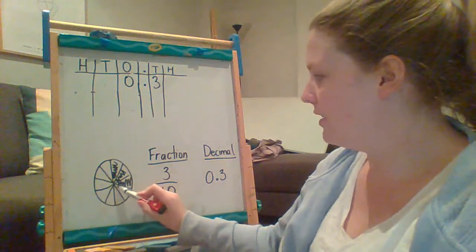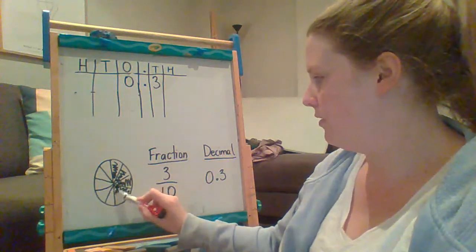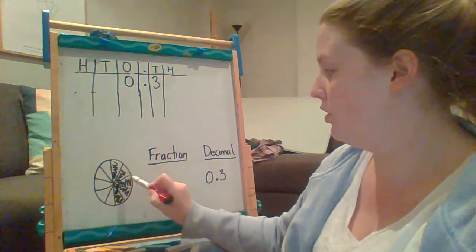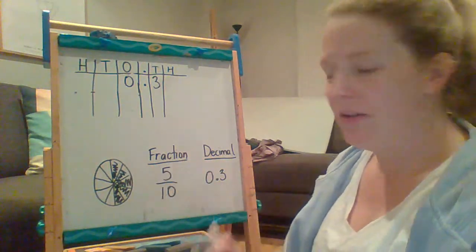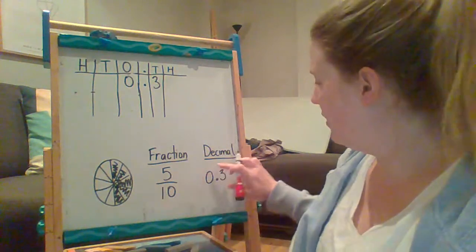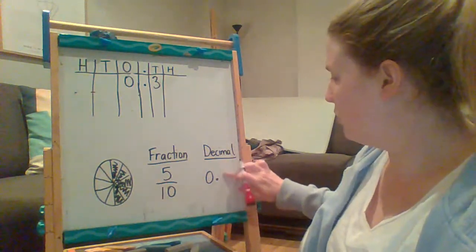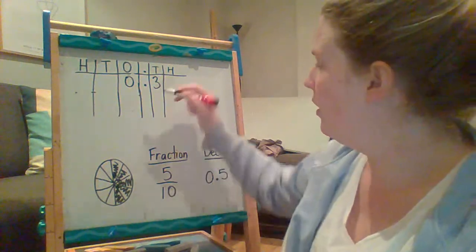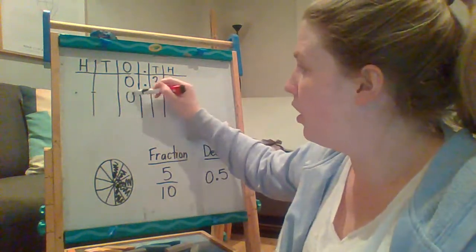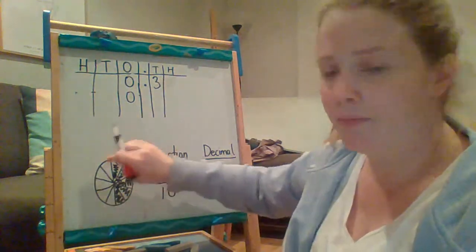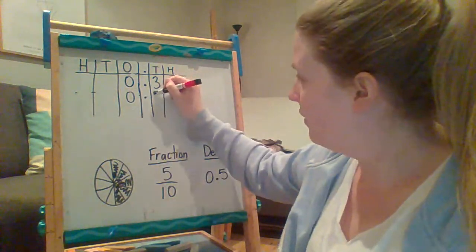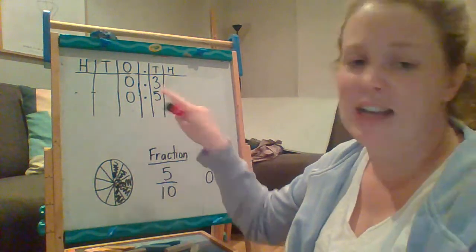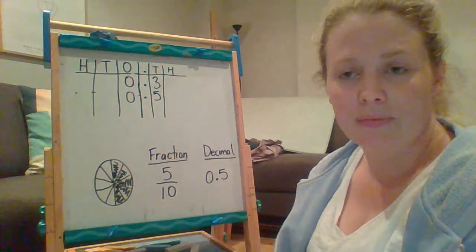If I was to change this to five tenths, so I have one, two, three, four, five pieces. Five tenths as a fraction. So that would mean that my decimal would be five tenths like this. I would show it, and I'd say I have zero whole, so I haven't eaten a whole pie yet. And I've only eaten five pieces of that pie. So I've only eaten five tenths.